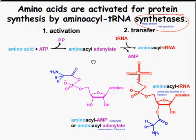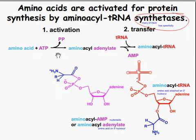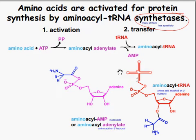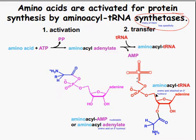Amino acids are activated for protein synthesis by aminoacyl tRNA synthetase. There are quite a few of those, and they are very specific. For activation, you have an amino acid plus ATP — it becomes phosphorylated, yielding amino acid adenylate. Then you add the tRNA molecule, leaving AMP, which gives you aminoacyl tRNA. The amino acid attaches on the 3' hydroxyl of the tRNA.